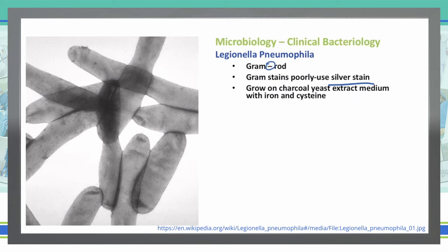It does grow well on charcoal yeast extract that also has iron and cysteine in it. One of the ways that we can determine if a patient has an infection with Legionella is by testing their urine — in the urine, they will have an antigen for Legionella pneumophila that is present when they do have that infection.